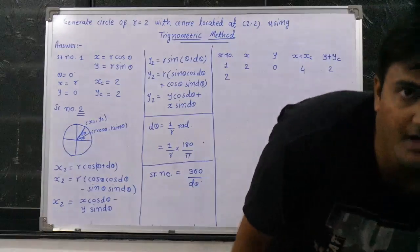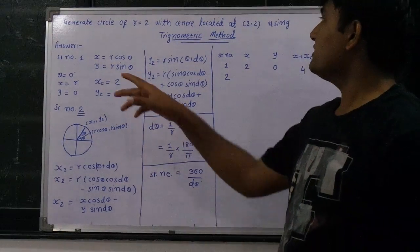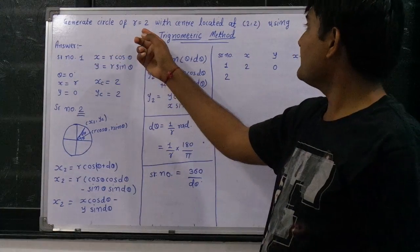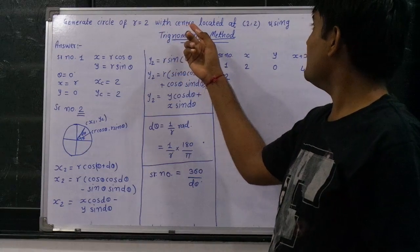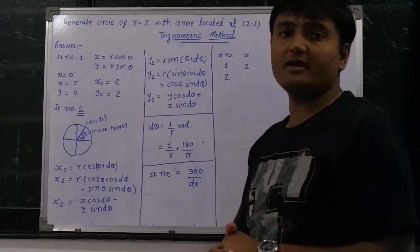Hello friends, my name is Jeri. So today we are going to learn about generating a circle of r is equal to 2 with the center located at (2,2) using the trigonometric method.